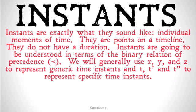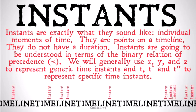What are instants? Instants are exactly what they sound like: individual moments in time. They are points on a timeline. They don't have a duration — an instant doesn't last a fraction of a second or a point of a second. Just like a point on a line doesn't have any length, or a plane doesn't have any depth, instants on a timeline don't have any duration.